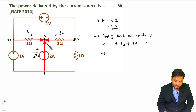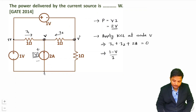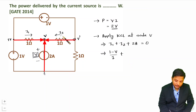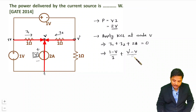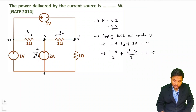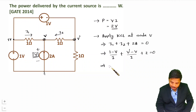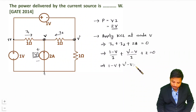Head voltage is V. So I1 equals (1 minus V) divided by resistance of 1. For I2, tail voltage is V dash and head voltage is V, so I2 equals (V dash minus V) divided by 1. Substituting into KCL: (1 minus V) plus (V dash minus V) plus 2 equals 0, which simplifies to 3 plus V dash minus 2V equals 0.